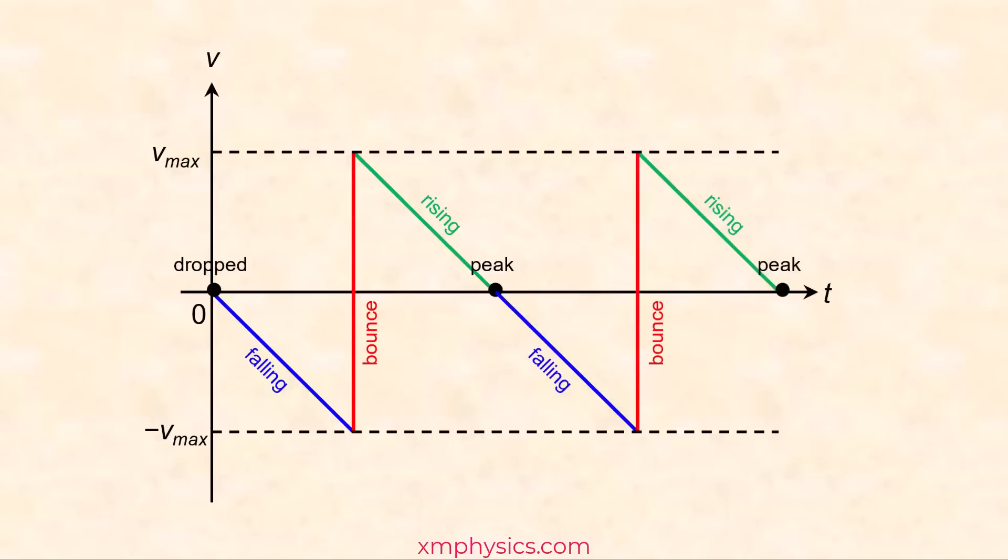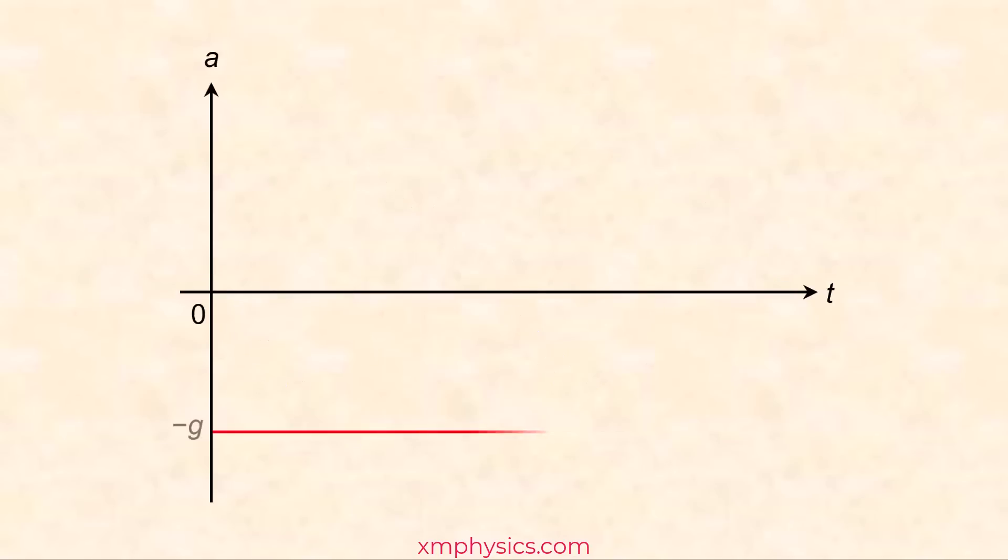So we're done with the V-t graph. Let's move on to the A-t graph. As long as the ball is in the air, as long as the ball is not in contact with the floor, it experiences only gravitational pull. So A is always negative 9.81 meters per second squared. Why is it negative? We have chosen upward to be positive.